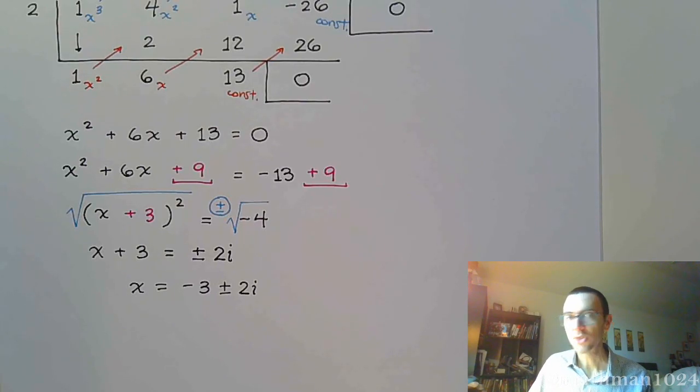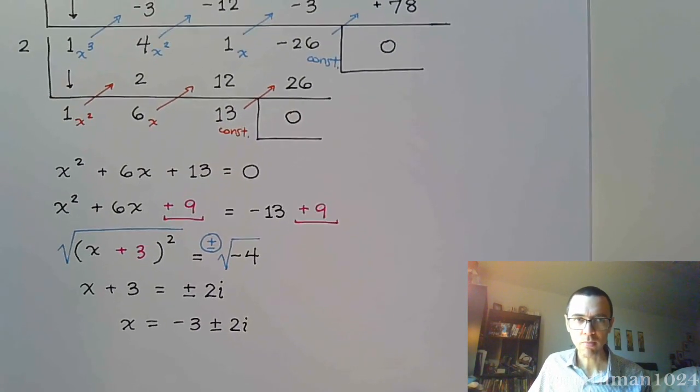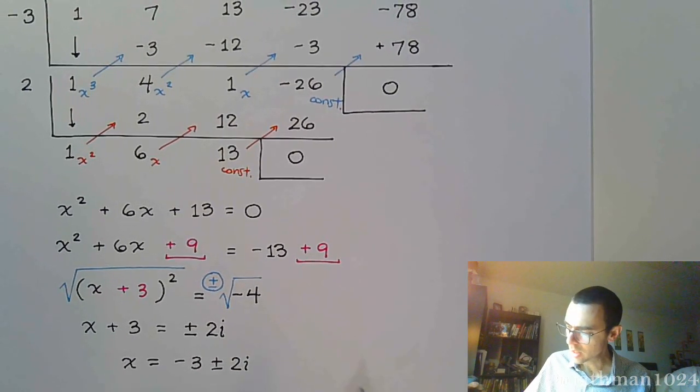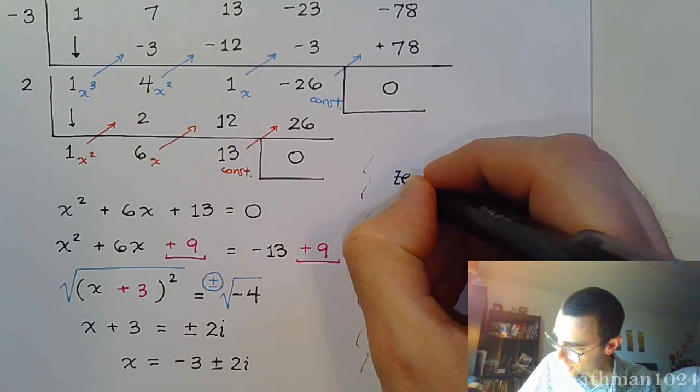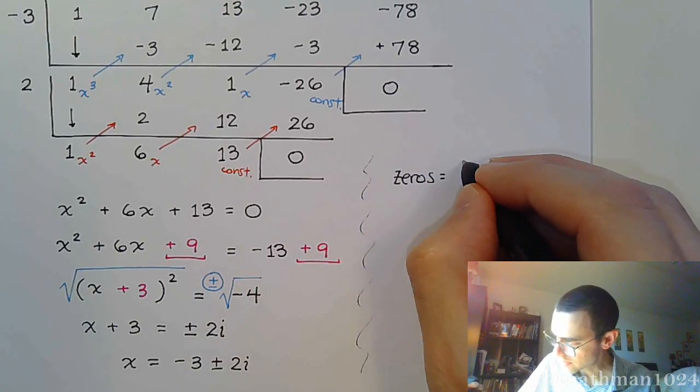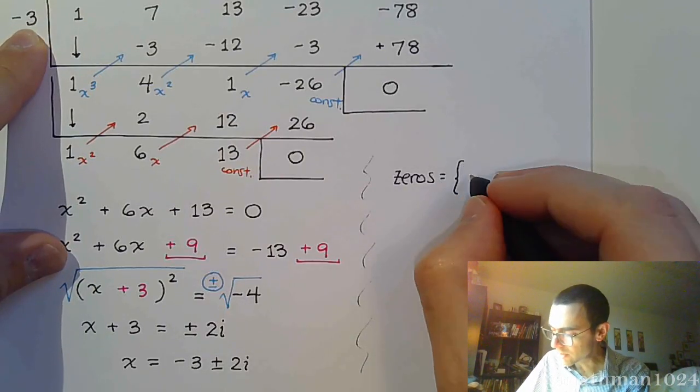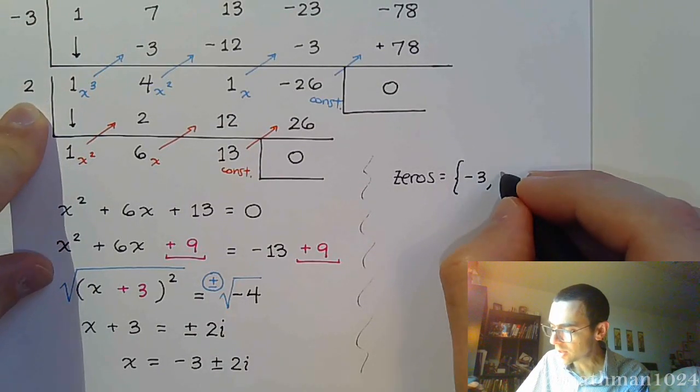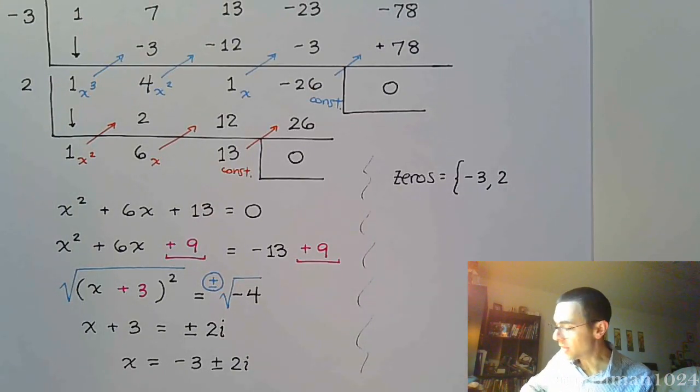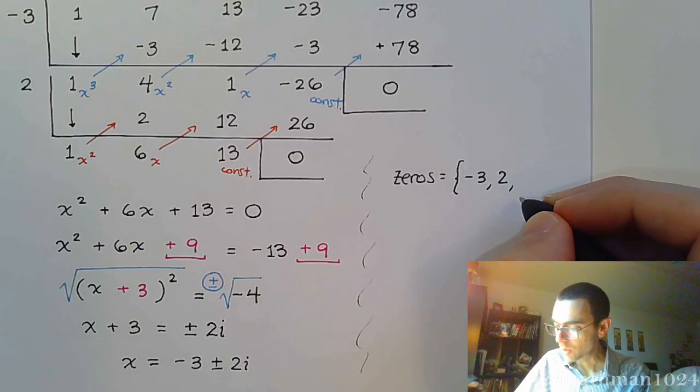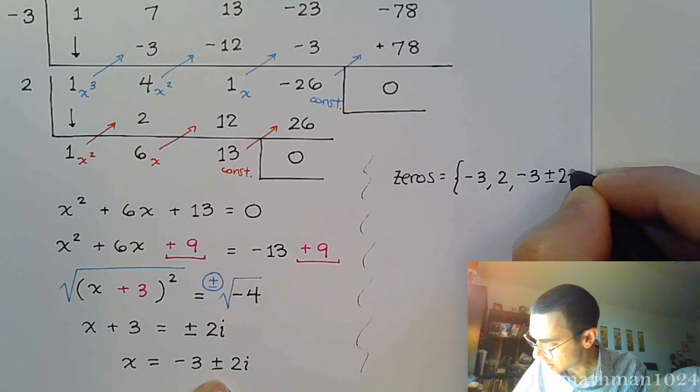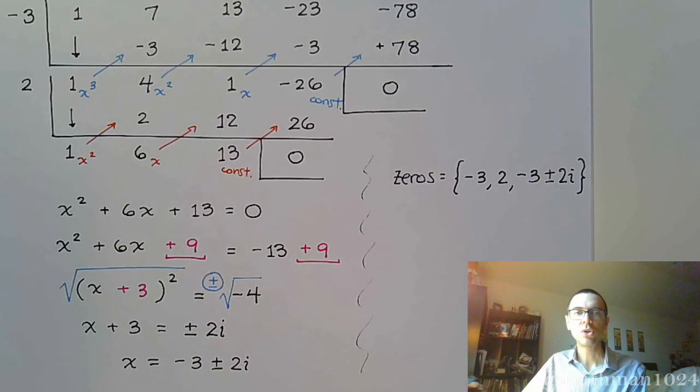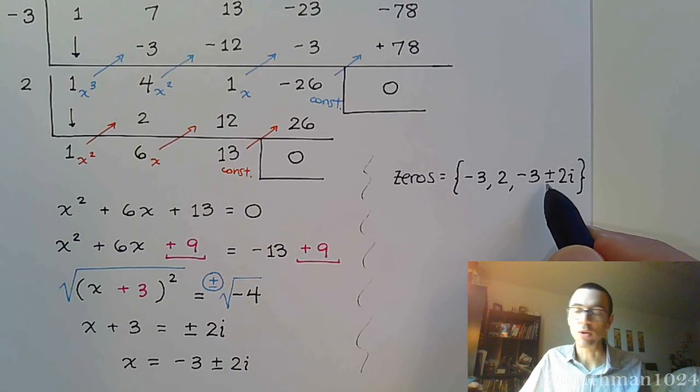If we go back to what the instructions say, the instructions say find all zeros. So let's do that. Let's list our zeros. Our zeros were, first of all, negative 3 and positive 2. I mean, those guys were given to us from the very beginning. And then we found the remaining zeros, which were negative 3 plus or minus 2i. So we were expecting four zeros because the polynomial was degree 4. There's 1, 2. The plus or minus gives us two more for a total of 4.